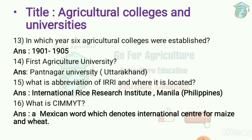Regarding Agricultural Colleges and Universities: 6 Agricultural Colleges were established between 1901 and 1905, including Kanpur, Coimbatore, and others. The question of the first Agricultural University is also discussed.